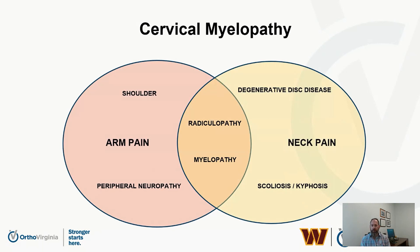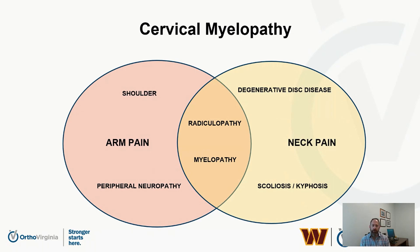Cervical myelopathy is part of a constellation of symptoms. There are other causes of arm or neck pain that patients may come to see us for. With regards to arm pain, they could have shoulder pathology, rotator cuff tears, or arthritis in the shoulder. It can be peripheral neuropathies such as carpal tunnel syndrome or cubital tunnel syndrome. On the other side, you have neck pain such as degenerative disc conditions, kyphosis, or scoliosis. And then there's a mix of arm and neck pain, which is where the spectrum of radiculopathy and myelopathy lie.